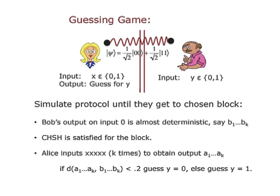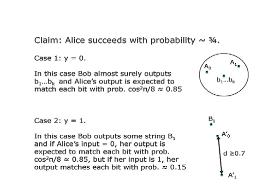Remember why we're doing all this: we're saying no matter what Alice and Bob are doing — we are simulating them and showing there's a contradiction. Alice inputs X K times to obtain a particular output. If the Hamming distance between her output and Bob's output is at most 0.2K, she guesses Y = 0, otherwise guesses Y = 1. The claim is that Alice succeeds in this guessing game with probability very close to three-quarters.